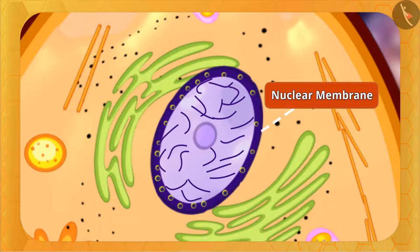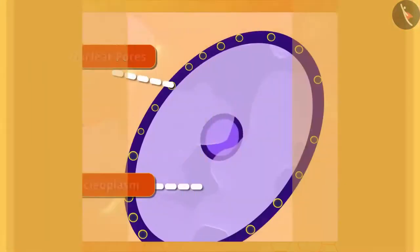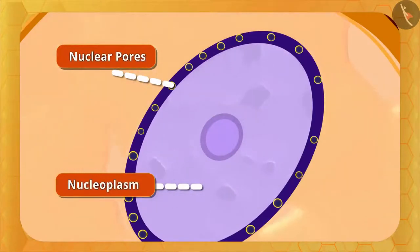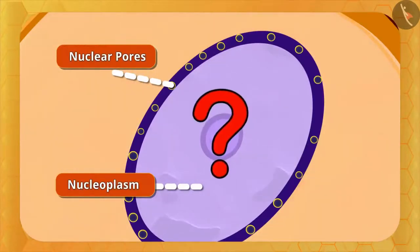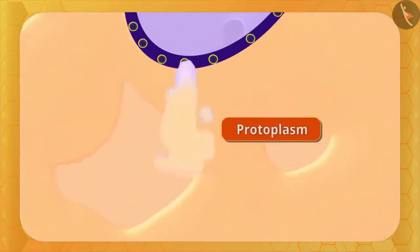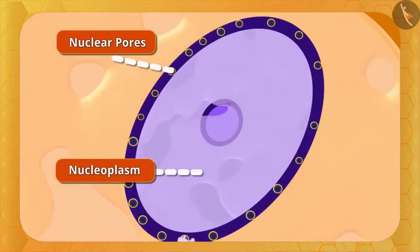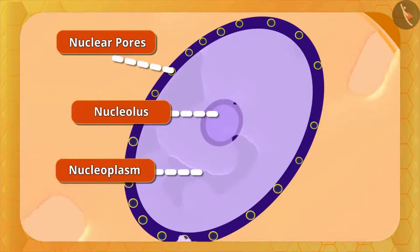You can notice many small holes in the nuclear membrane called nuclear pores. Inside the nucleus there is a jelly-like fluid called nucleoplasm. The nuclear pores allow the passage of nucleoplasm into the cytoplasm, and the nucleus and cytoplasm together are called protoplasm. You can also notice a spherical part in the center of the nucleus called the nucleolus.